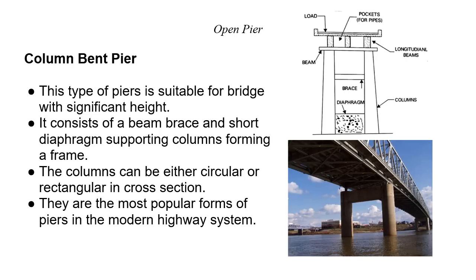Bracings and main girders are part of the column bend pier. This type of pier is suitable for a bridge with significant height. The Column Bend Pier consists of a beam, bracings, and a short diaphragm supporting the columns, forming a frame. The columns can either be circular or rectangular in cross-section.